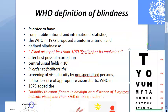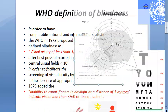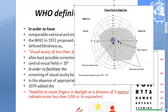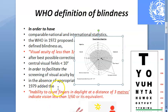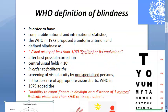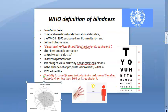There is also another parameter for WHO blindness: visual field less than 10 degrees. Looking at the visual field for the right eye, there are many degrees marked. If a person's visual field is less than 10 degrees — meaning they can only see within that small area — then that is also called blindness. So less than 3 by 60 Snellen's visual acuity or less than 10 degrees of central visual field are both the WHO definition of blindness.